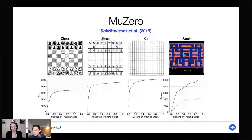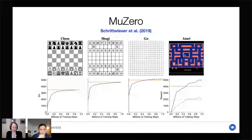We focused our analysis on MuZero, a recent model-based system that achieves state-of-the-art performance on domains ranging from Go to Atari, originally released in 2019 with a more recent version published in Nature.